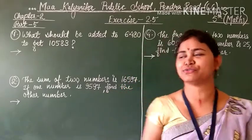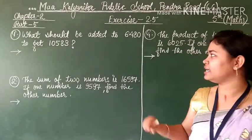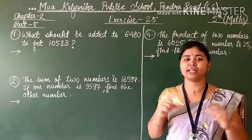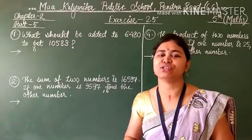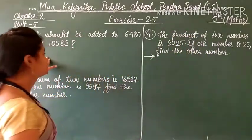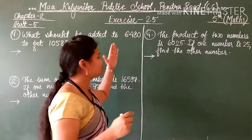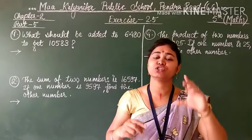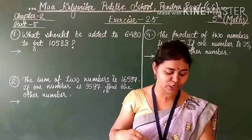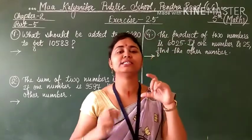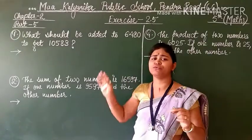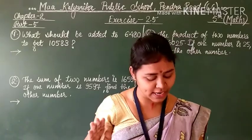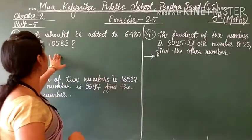So in Exercise 2.5, students, some word problems are there, some story sums are there, but here short word problems are there. You have to read it, understand it, and then solve the question. Few examples related to Exercise 2.5 are given on page number 32. The pattern of the question is the same, only the numbers are changed, so you can refer to those examples. I am starting with question number 1 first.